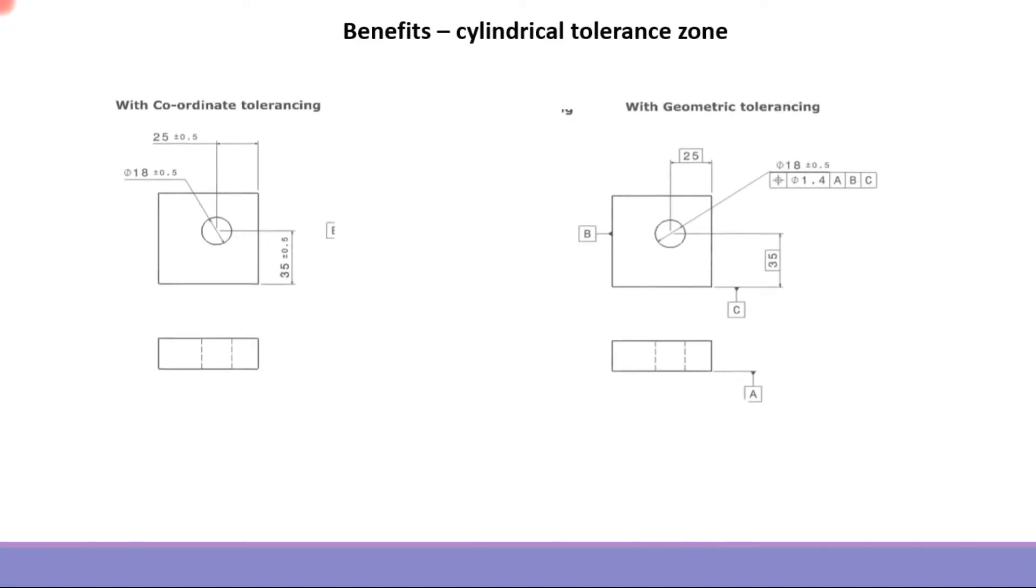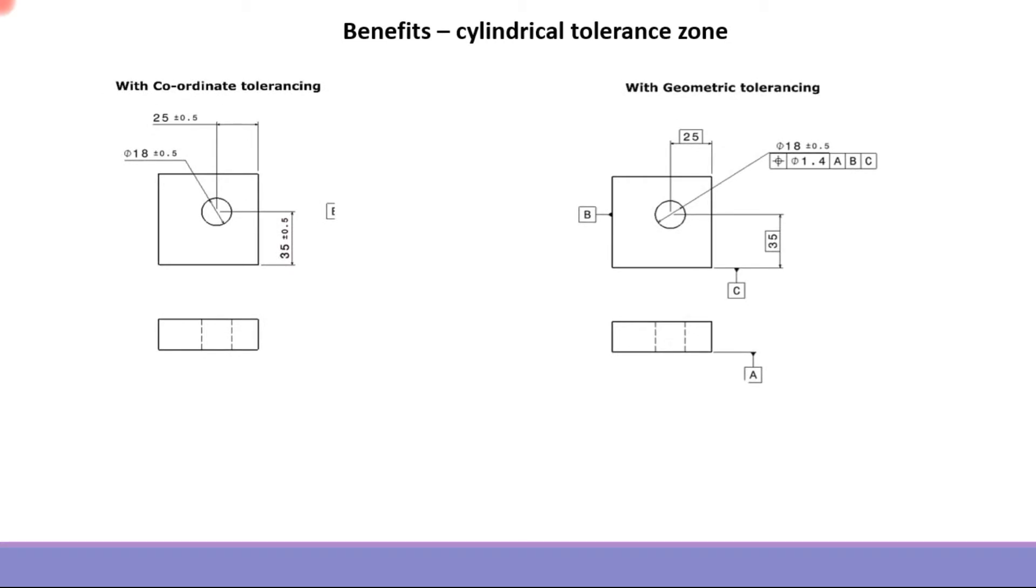Let's say we have a part and we make a drawing with both coordinate tolerancing as well as geometric tolerancing. We have a part which is having a hole, and that hole is located from the edges at 25 and 35 mm, and the hole has a diameter of 18 with size tolerance.